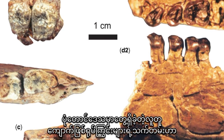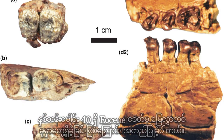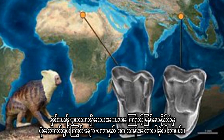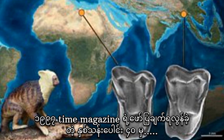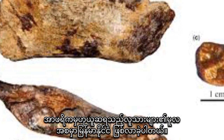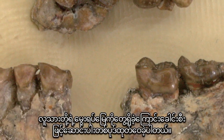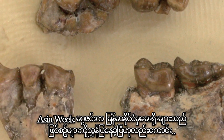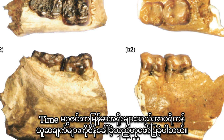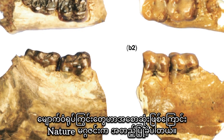The primate fossils found in the Pondaung area were confirmed to be 40 million years old, as they were found in strata from the Eocene period. At the time, the oldest primate in the world was considered to be only 30 million years old, so the Pondaung primate fossils from Myanmar were 10 million years earlier. In 1997, Time magazine reported that fossils of advanced primates from 40 million years ago were found in Myanmar, suggesting the origin of humans — previously thought to be in Africa — may be Myanmar. The Boston Globe published an article headlined that the cradle of humankind had been found in Asia, and Time magazine on August 5, 1997 reported that the Burmese bones challenged the African origin.